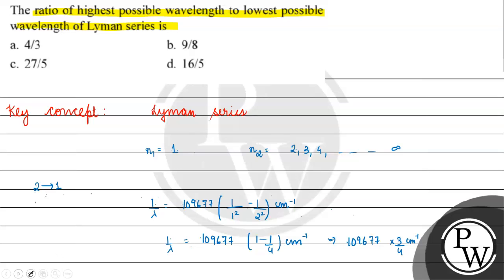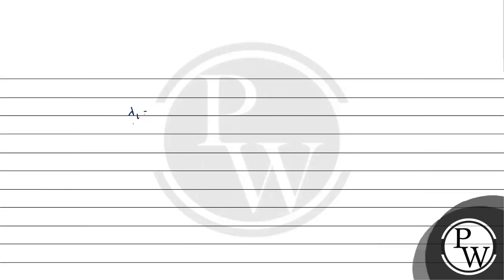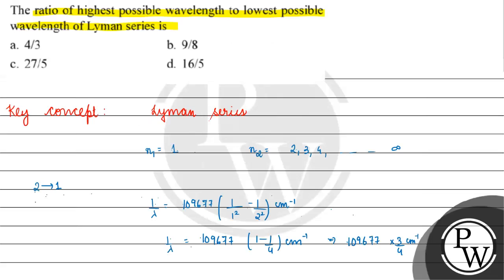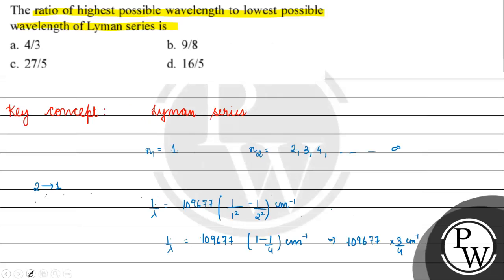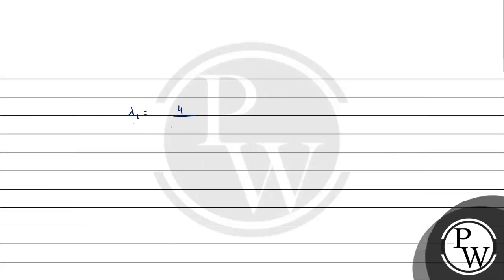So lambda 1 equals 4 by 3 into 1 upon 109677 centimeters.